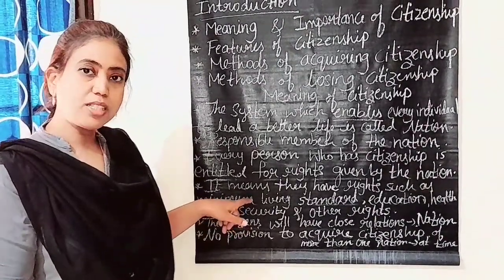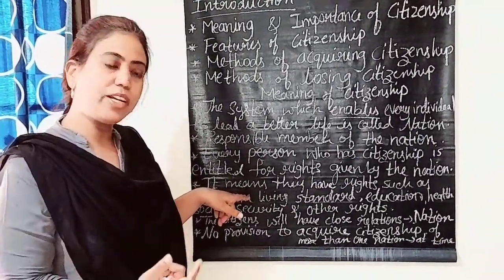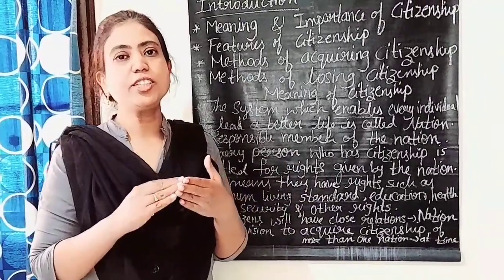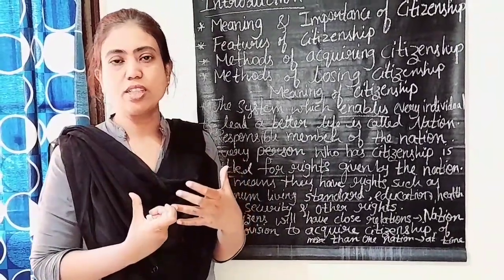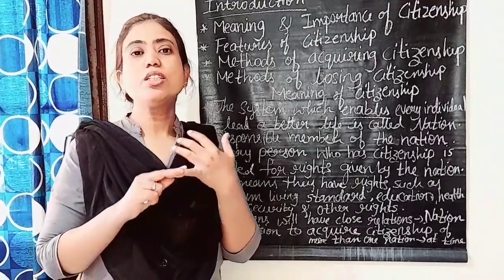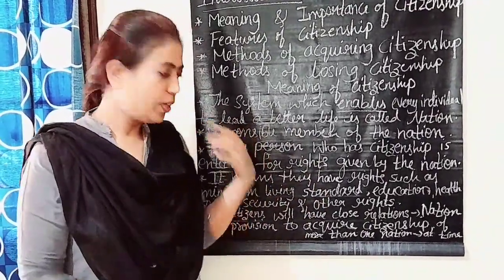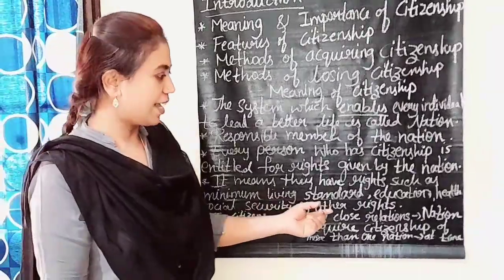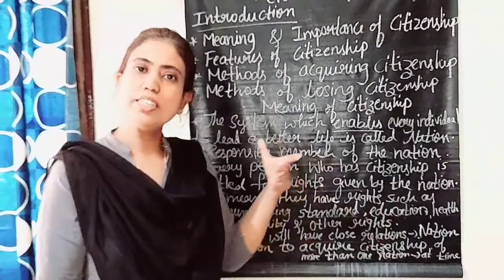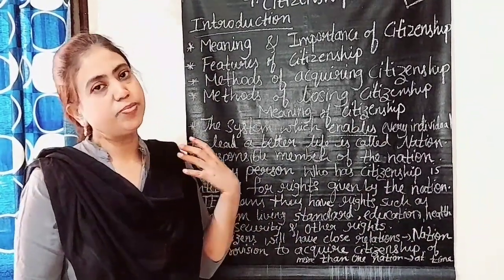Every citizen in the nation gets rights such as minimum living standards — meaning one has to live at a certain standard of life. To achieve that, you should get the opportunity of jobs, your own business, and education — everyone can join school. Health facilities are also available for citizens.